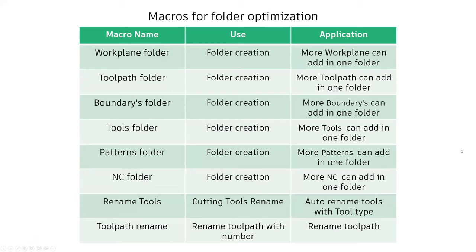First, I'll cover macros for folder optimization. These are the available macros: workplane folder, toolpath folder, boundary, tool folder, pattern, NC program, toolpath rename, and tool rename. Instead of just showing them on the slides, I'll go through each macro and show you how to use them inside PowerMill.